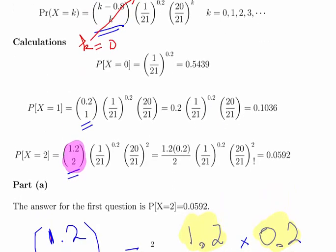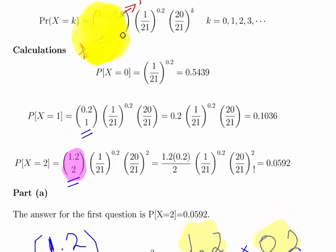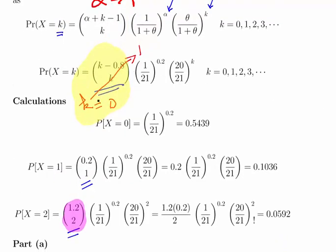When we have k is equal to 0, essentially we just let the whole thing equal to 1. In this instance, the binomial coefficient goes to 1 when k is equal to 0. That will also go to 1 when k is equal to 0. So we're left with this. Probability of x equal to 0 is 1 over 21 to the power of 0.2. And that is 0.5439.